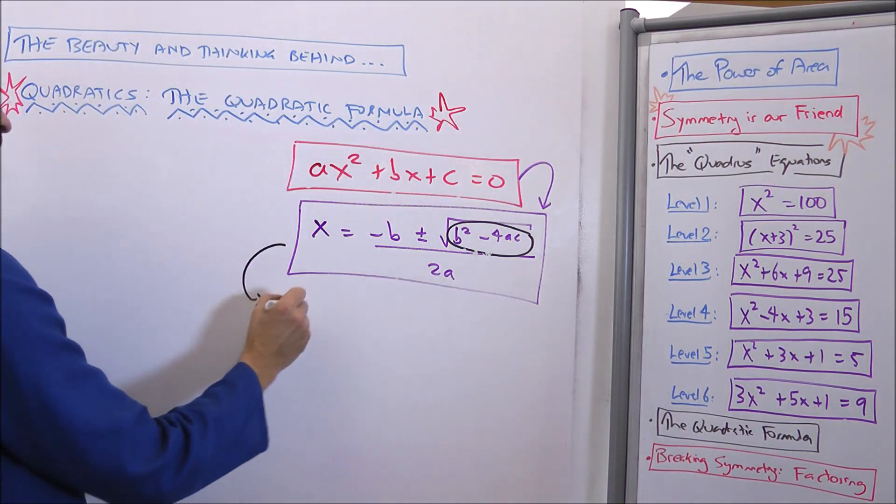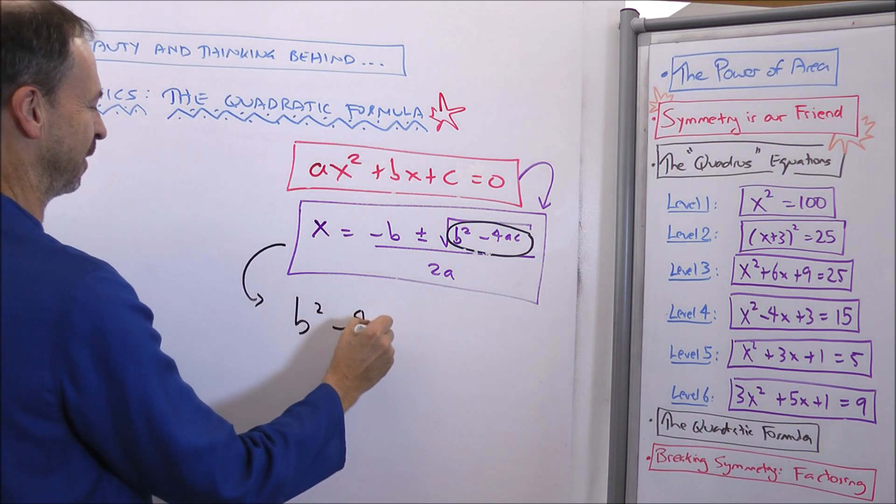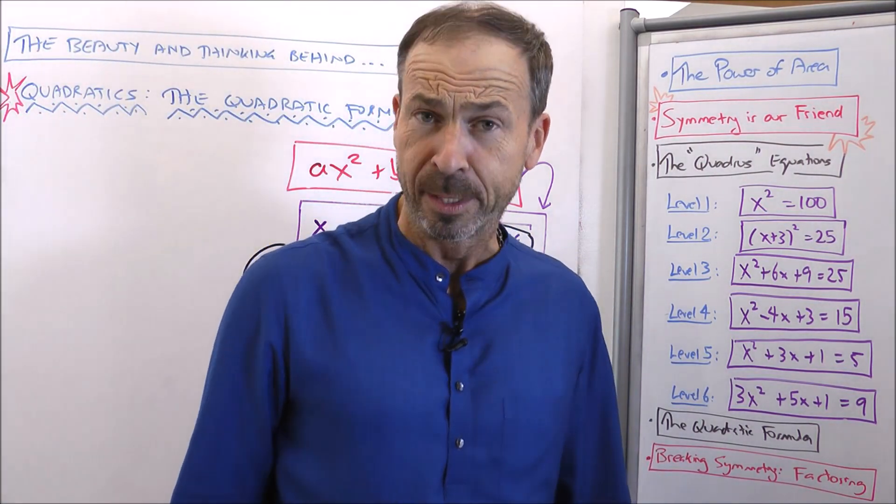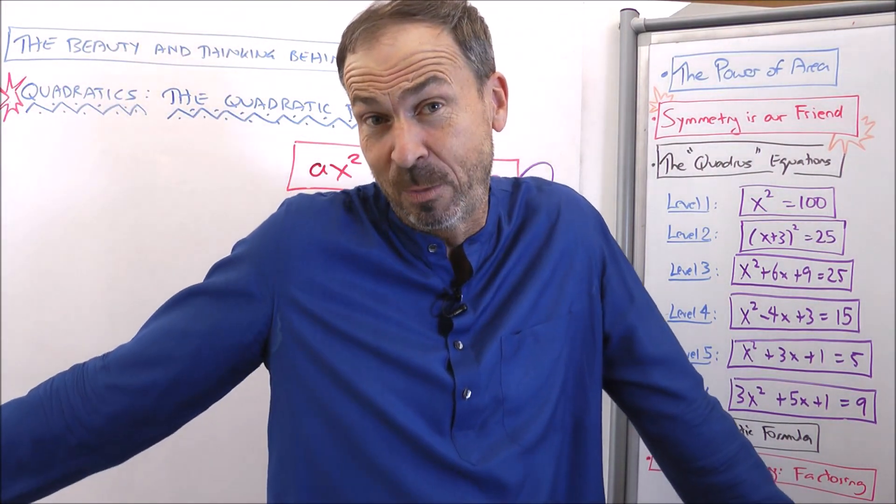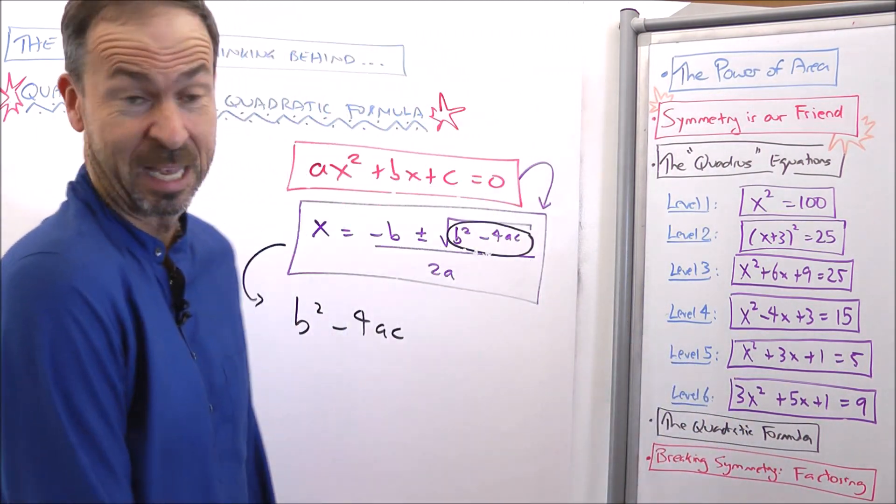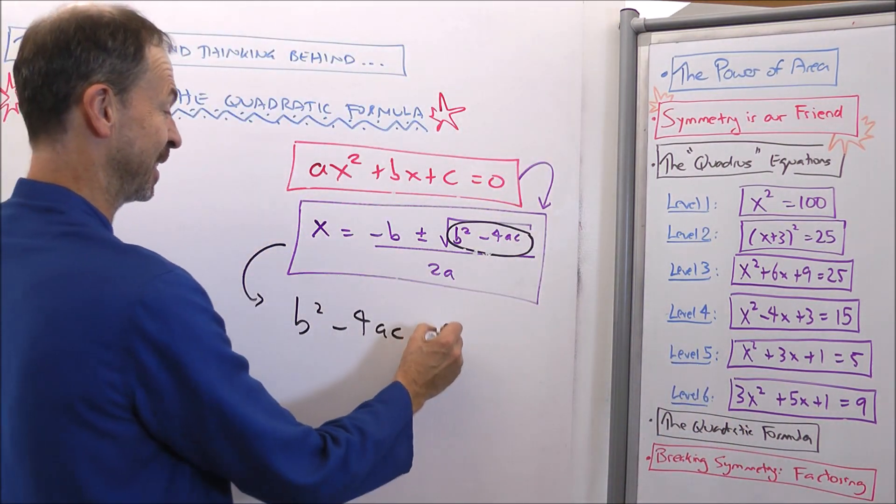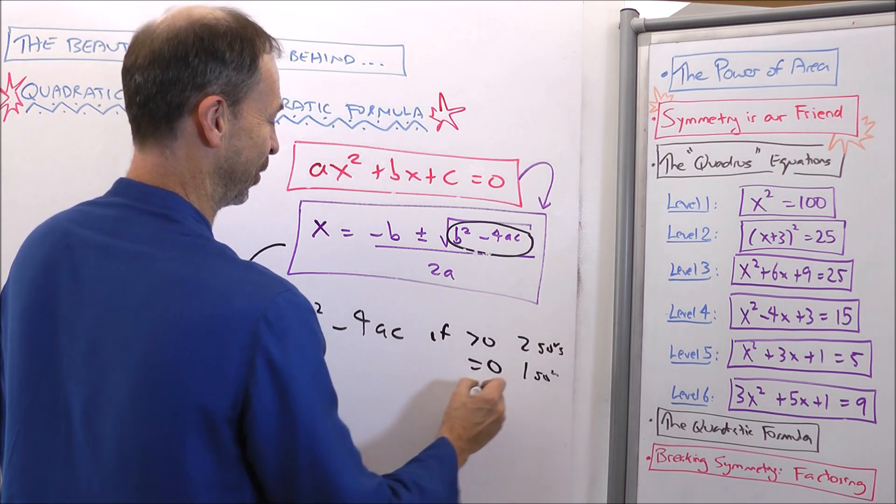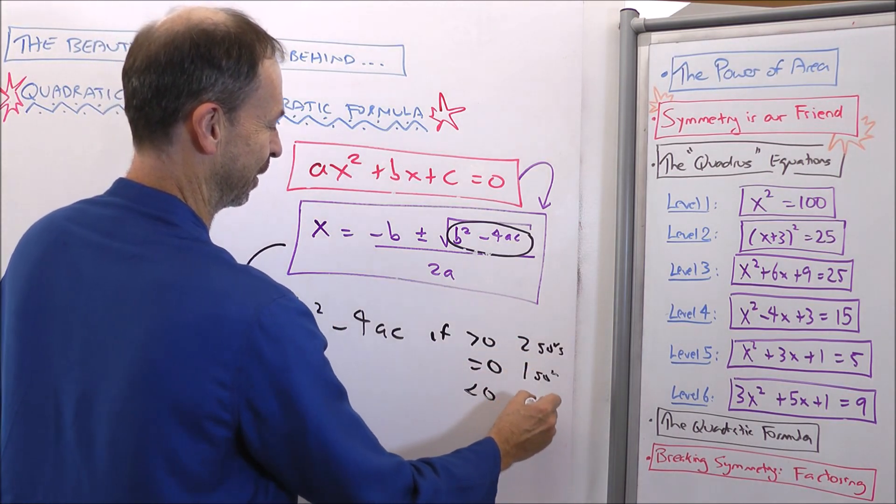So, people often say, let's focus on b squared minus 4ac. So, they sometimes give it a name, they call it the discriminant of the quadratic. Is that a term you've heard? You might see it in your books. Some books have it, some books don't. But if it's greater than zero, then you've got two solutions. If it equals zero, one solution. If it's negative, zero solutions.